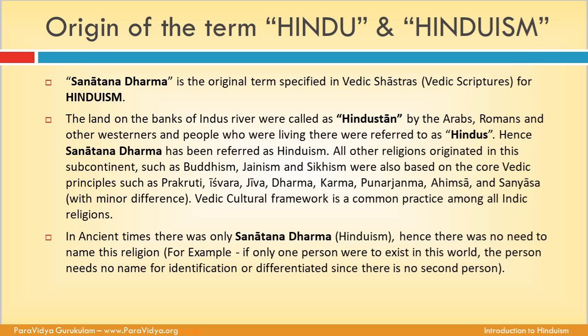In ancient times, there was only Sanatana Dharma. Hence, there was no need to name this religion. For example, if only one person were to exist in this world, that person needs no name for identification or differentiation, since there is no second person.